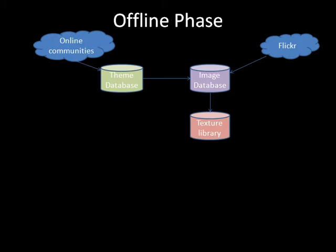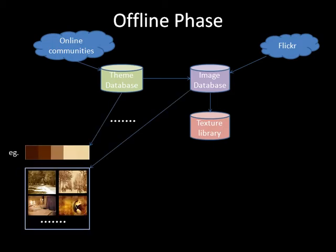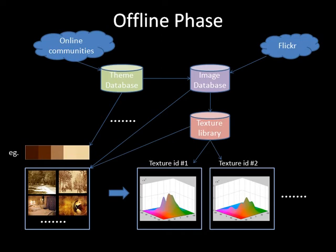We then use the image database to build a texture library with 200 classes of textures. For every image in the image database, we tag it with the nearest color theme from the theme database. This is an example color theme and a subset of its corresponding images. Finally, for each color theme, we learn a color probability density function for every texture class using the tagged images.